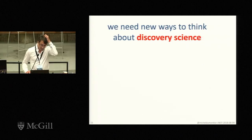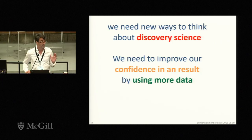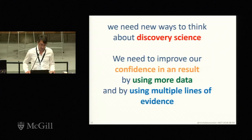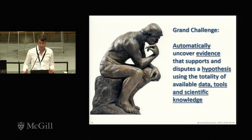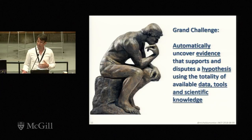We have to fundamentally rethink how we do discovery science. We obviously need to improve our confidence in any one given result, and I think we can do this in two ways. One is we can use more data, which helps us build confidence about the individual result. But we can also use multiple lines of evidence that helps convince us that an effect truly does occur. The grand challenge is how can we automatically uncover evidence that would potentially support or dispute a hypothesis using all available data, tools, and knowledge.